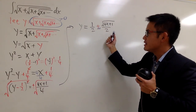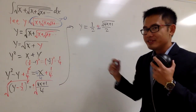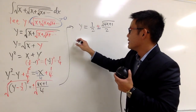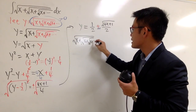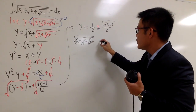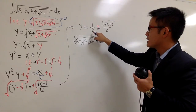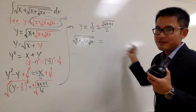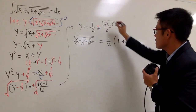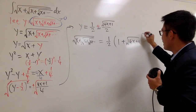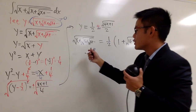Putting things together, we are saying that the square root of x plus square root of x plus square root of x plus dot dot dot equals one half plus square root of four x plus one over two. Both terms have one half, so factoring it out we get one half times the quantity one plus square root of four x plus one. Originally we wanted to integrate this, so we integrate that same expression.